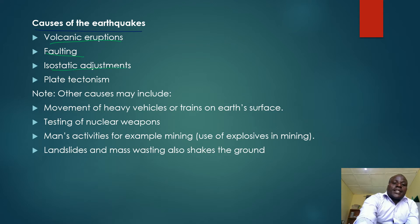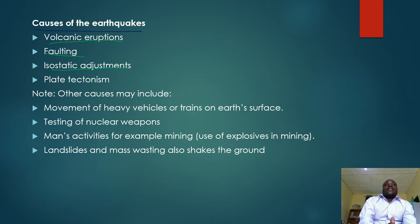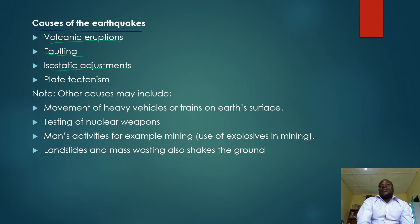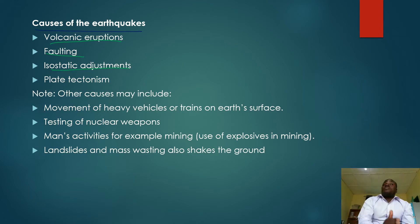We have isostatic adjustments. Isostasis is a state of equilibrium within the parts of the crust. The crust contains both heavy and light rocks. Most of the time, heavy rocks always try to sink and light rocks always try to rise. This sinking and rising of rocks of different characteristics — heavy and light — causes rock displacement also.